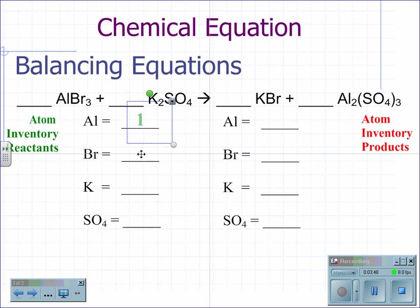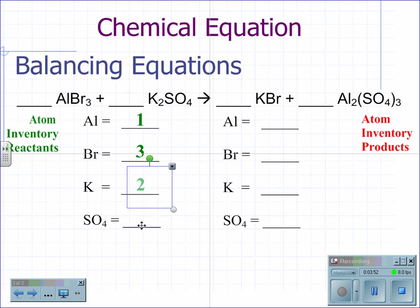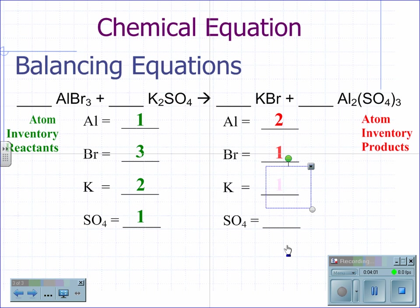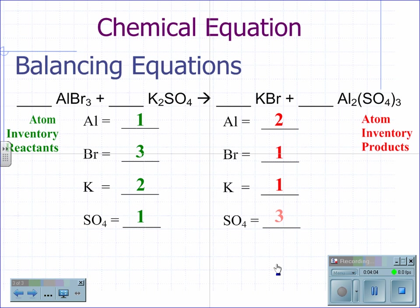On the reactant side: aluminum — one; bromine — three; potassium — two; sulfate — one. On the product side: aluminum has two; bromine has one; potassium has one; and sulfate has three.